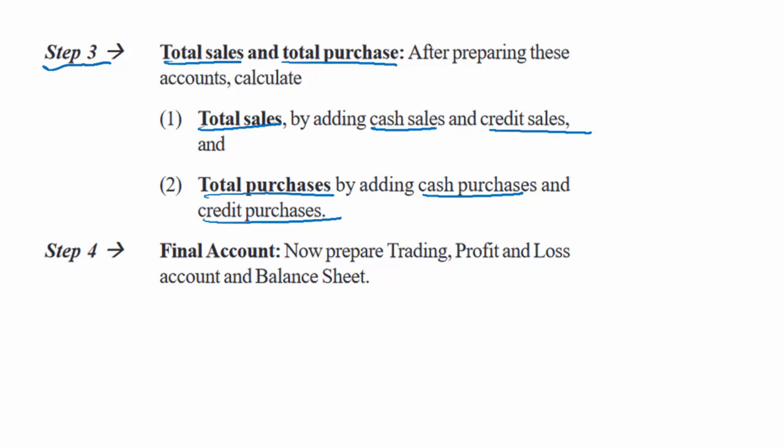We have to do this for each and every account. Then we move to Step four, where we prepare the final accounts — that is, the trading P&L account and balance sheet. There is a difference between the statement of affairs (first) method and the conversion method. In the conversion method, we try to convert single entry into double entry by gathering all the relevant information.